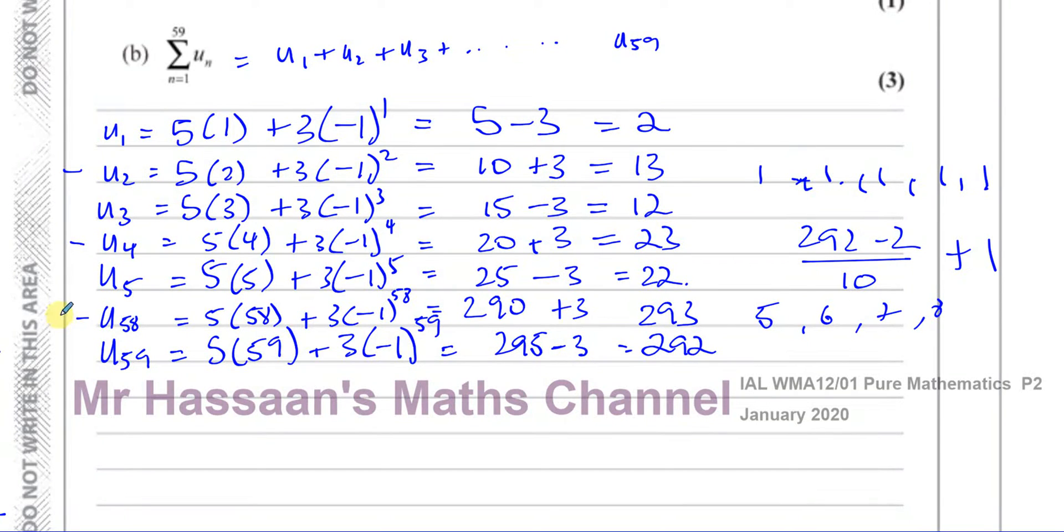By the time you get to every even number, every even term, they become zero. Basically you're going to be left with in the end a minus three when you add them all together. Then you've got the sum of numbers five plus ten plus fifteen plus twenty plus twenty-five plus thirty all the way up to 295.